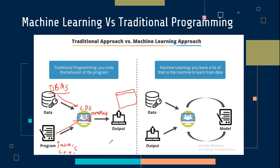Let us take one example to understand how traditional programming works. Consider I want to do a very simple program — addition of two numbers. I am taking two variables A and B and storing the addition into a third variable C. For that I have to write a program, let us say in C++ programming language. Using C++ I am performing the addition of two numbers and storing the result into C. This C program is sent to the CPU, which uses the C++ compiler and converts it into machine language — that is, from high-level to low-level programming language.